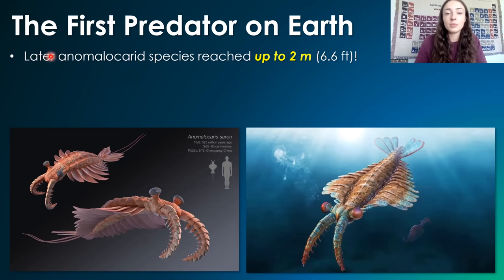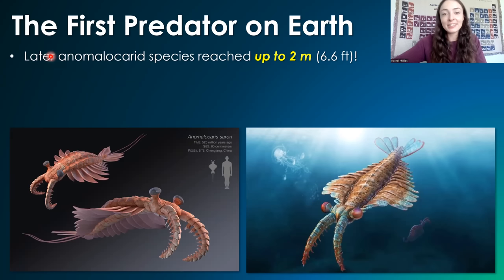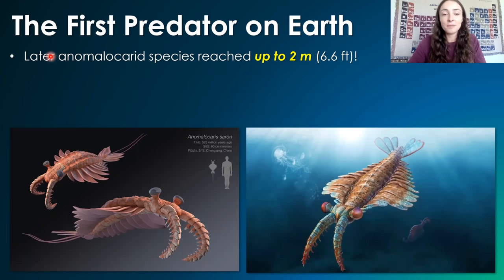Later in the Cambrian, anomalocaridid species got up to two meters instead of two feet, like we talked about earlier. This is around 6.6 feet, so they got pretty big.